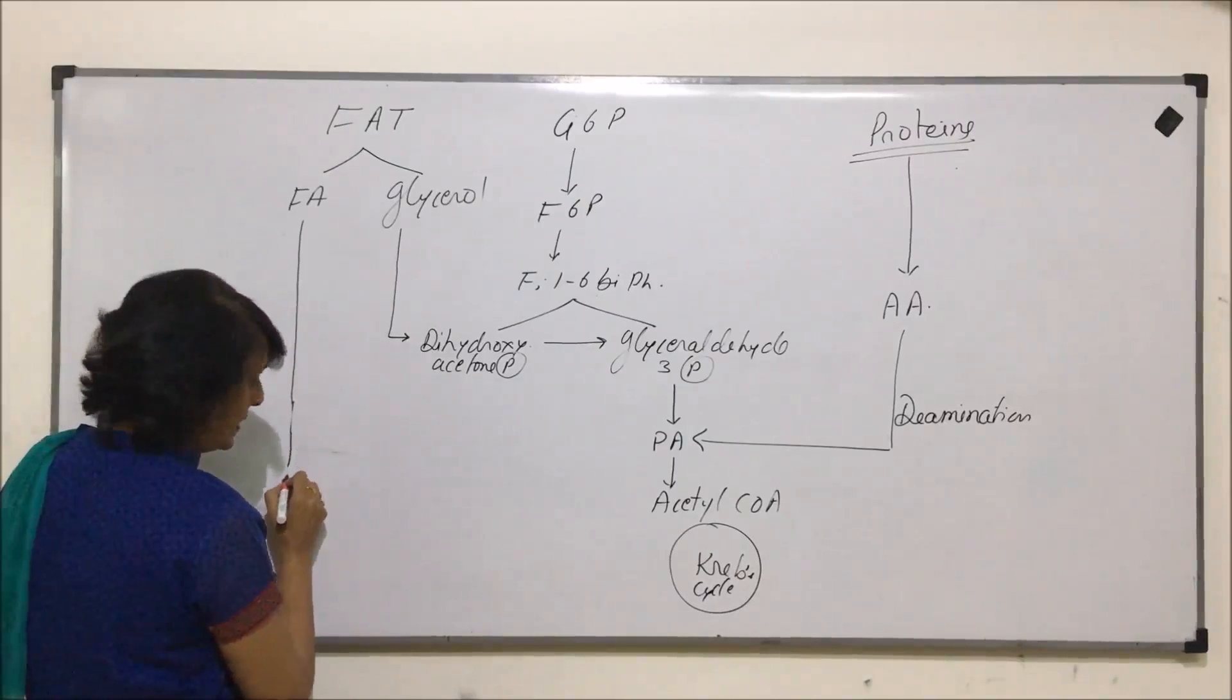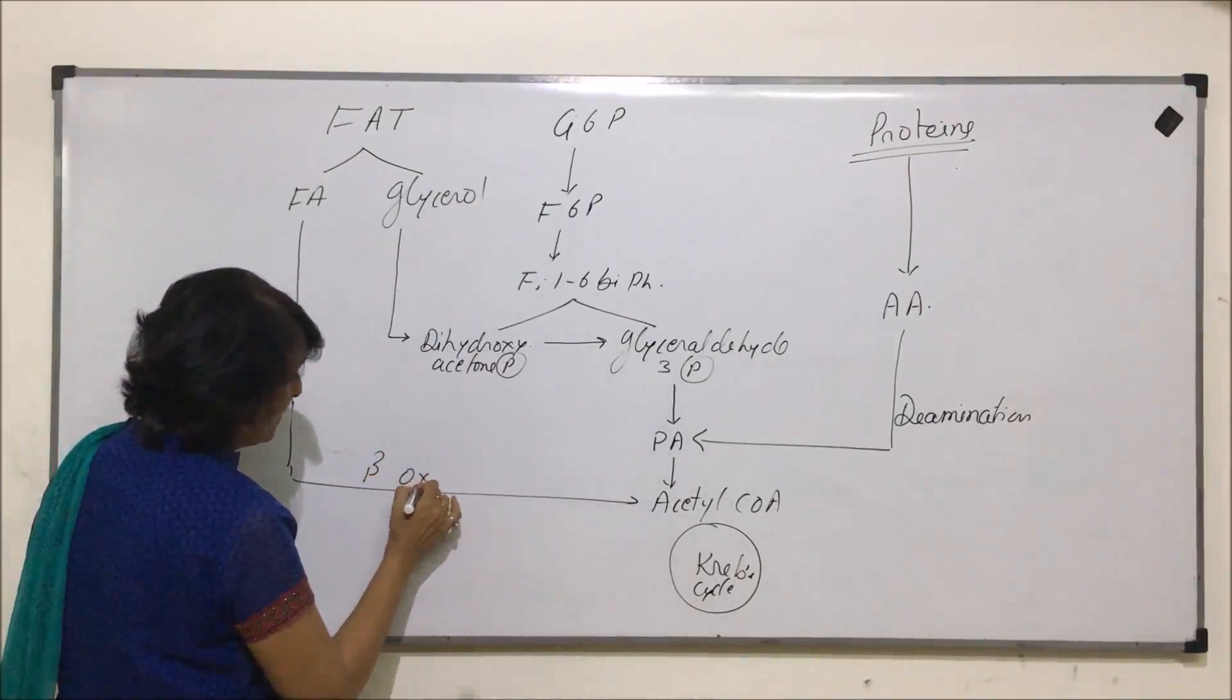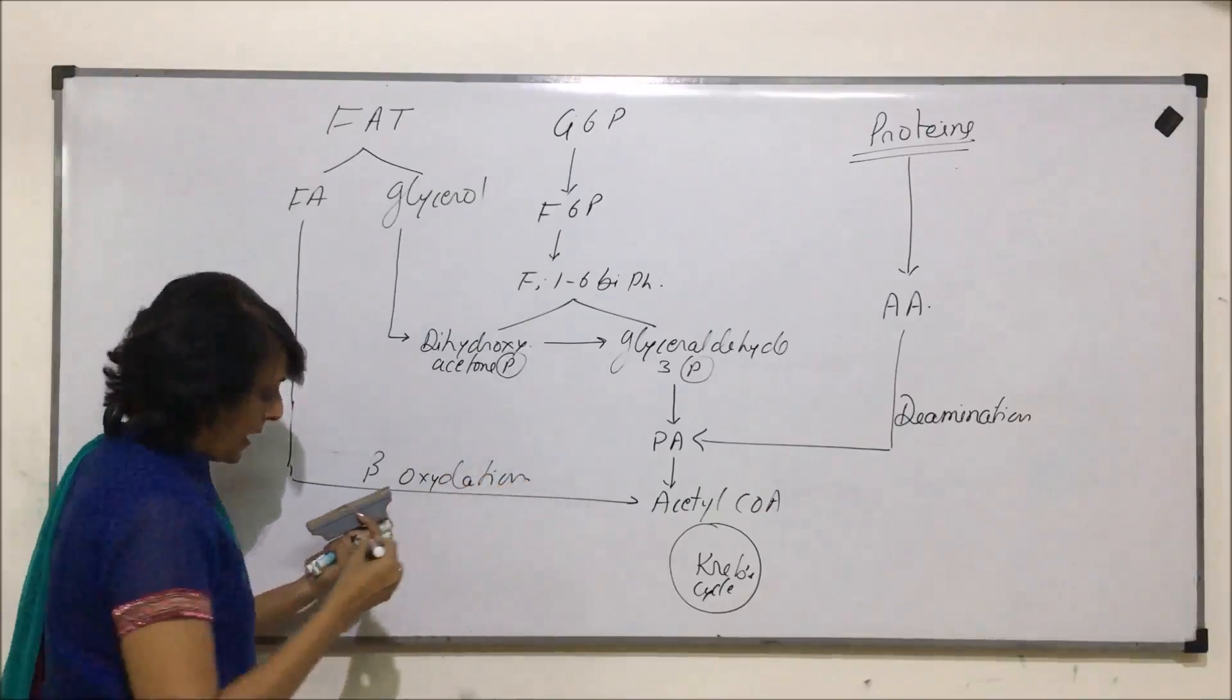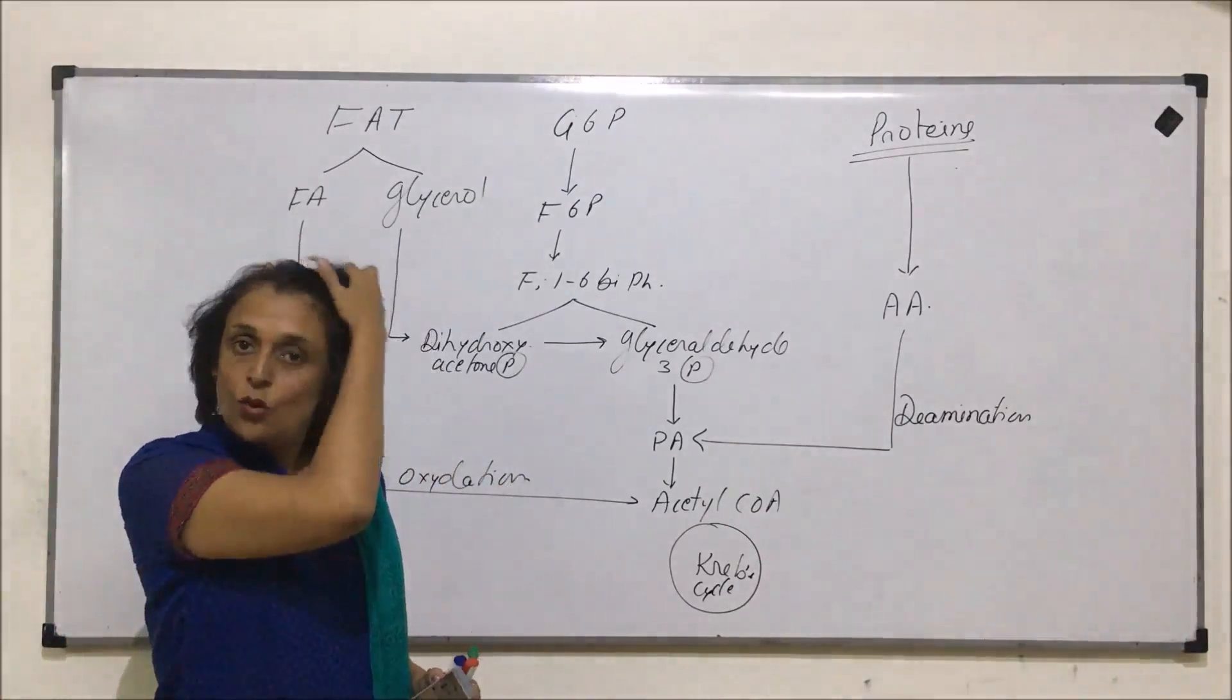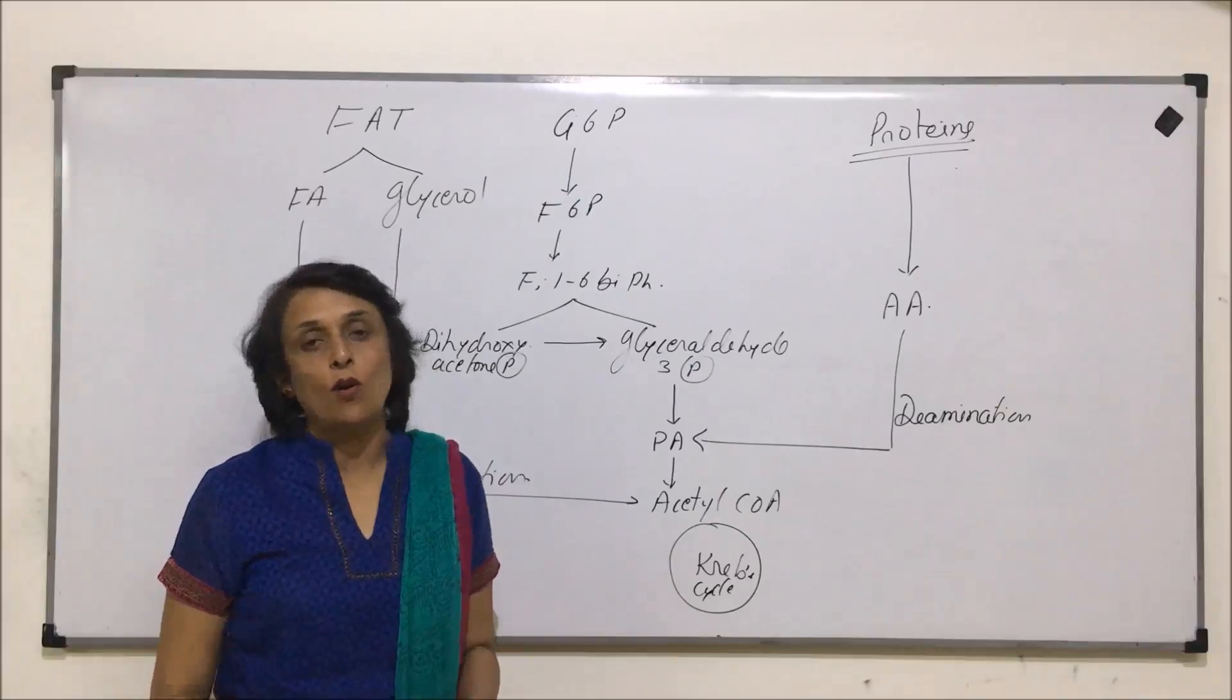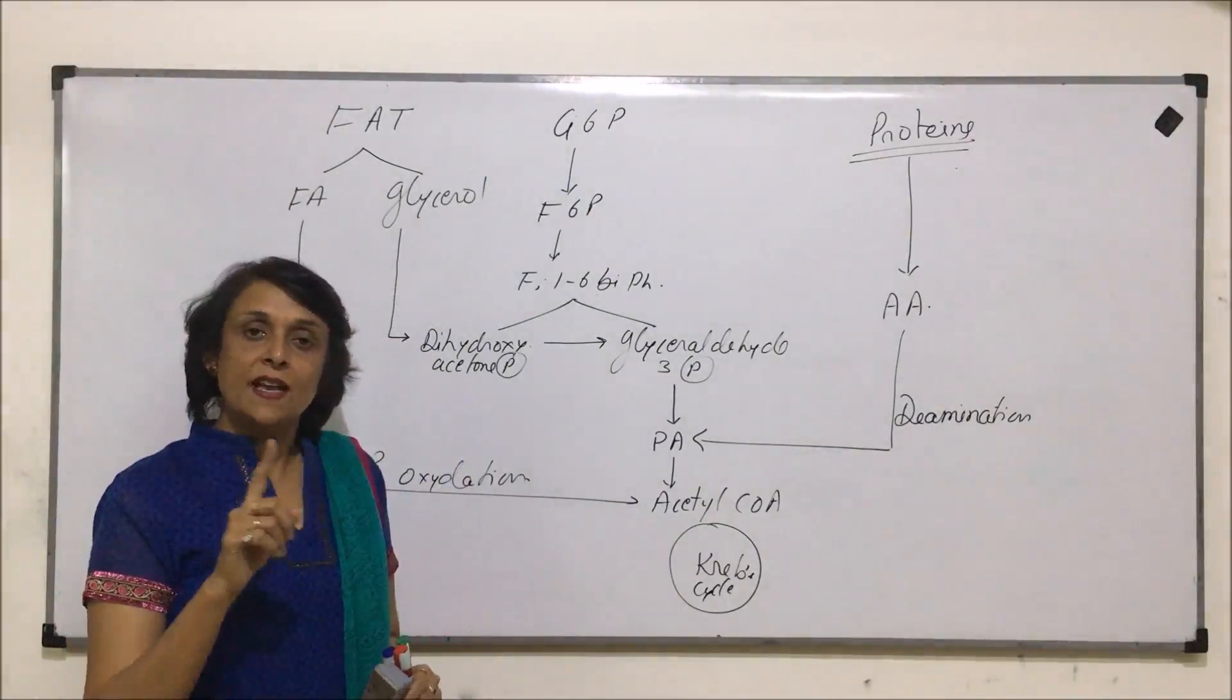So fatty acids will join this cycle here after beta oxidation. Now again when we have to calculate number of ATPs coming from fat, we need to know whether it is a monoglyceride fat, diglyceride fat, or a triglyceride fat. Monoglyceride fat will give us one fatty acid and one glycerol.